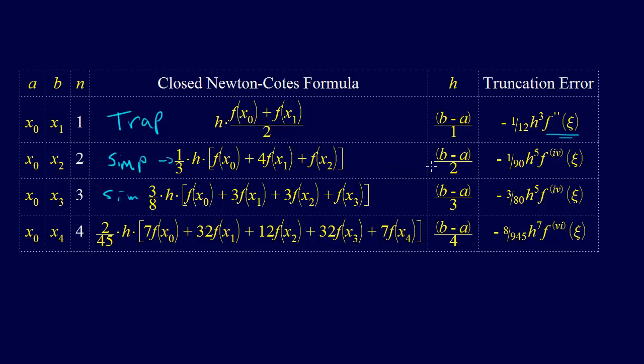Now let's look at what the error is for Simpson's 1/3rd rule. It's proportional to h to the 5th times the 4th derivative.